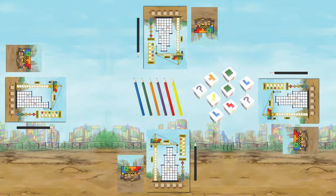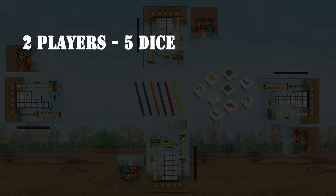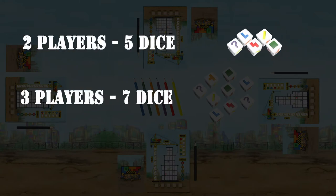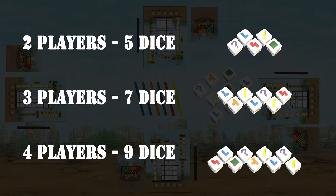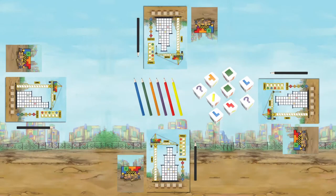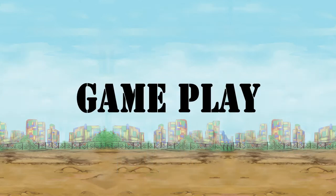The starting player collects the dice based on the number of players in the game. If playing with two players get five dice, if playing with three players get seven dice, and if playing with four players get all nine dice. Any leftover dice are returned to the box. That takes care of setup.